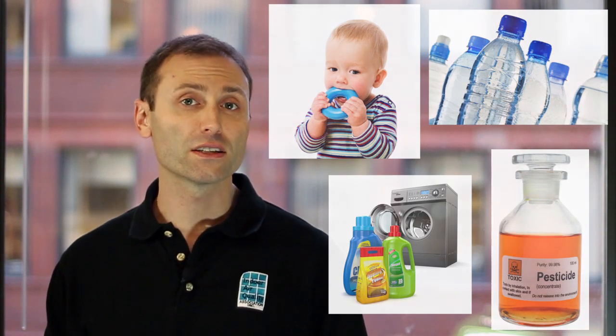Many endocrine disruptors are SVOCs — semi-volatile organic compounds. That means they can be found in the original product, in the air around that product, and then from the air condensed onto indoor surfaces, most notably seen in house dust.